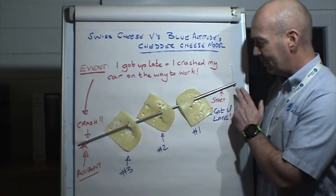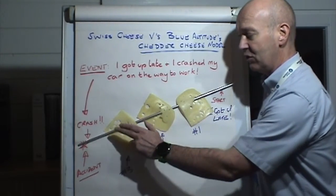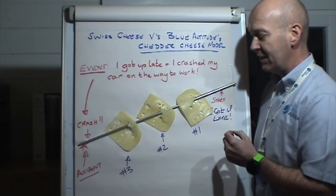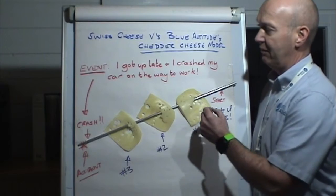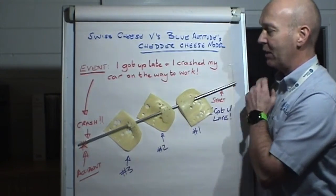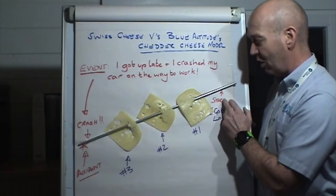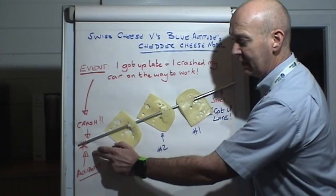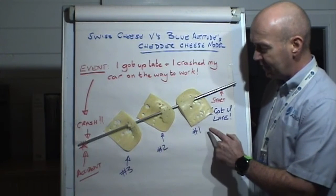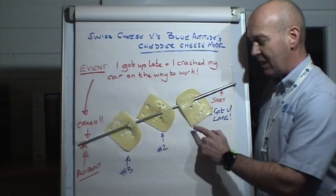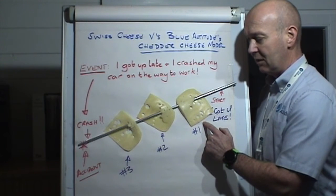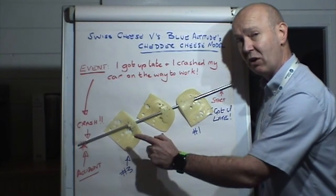So to help you understand, the example event I'm using is: I got up late and I crashed my car on the way to work. You can see the start is getting up late, and the outcome is crashing my vehicle. Each piece of Swiss cheese represents one of the sequence of events that led to me crashing my car.